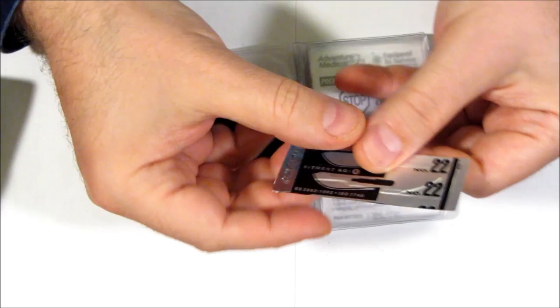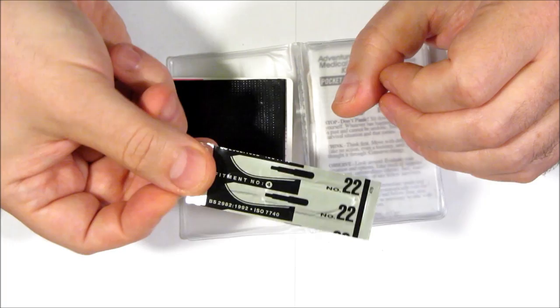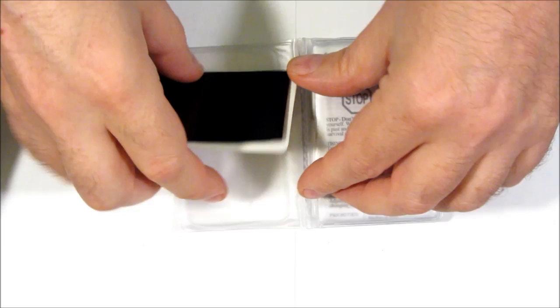This is a scalpel blade. This is a gamma-sterilized medical scalpel blade for doing minor surgery, but it's also just a backup knife. So if you need another knife, here's one. Or if you need to do some surgery, and you need a sterile scalpel blade. That's a number 22 scalpel blade.